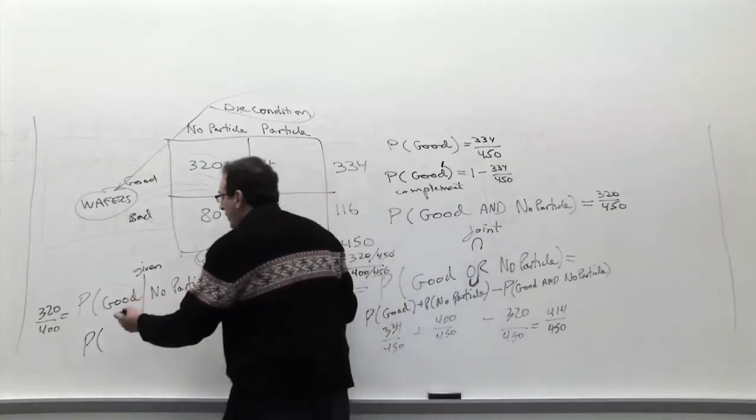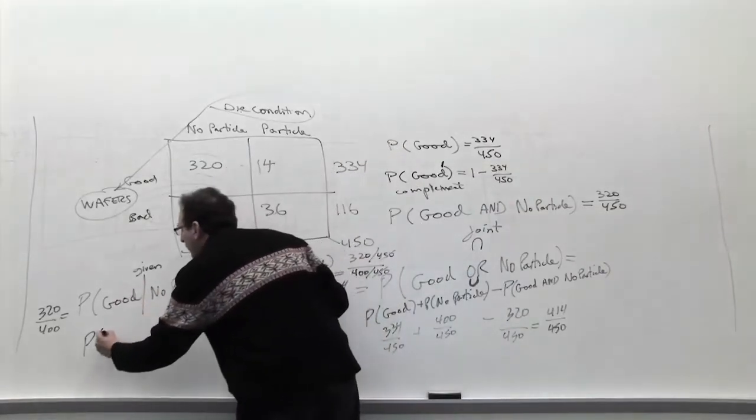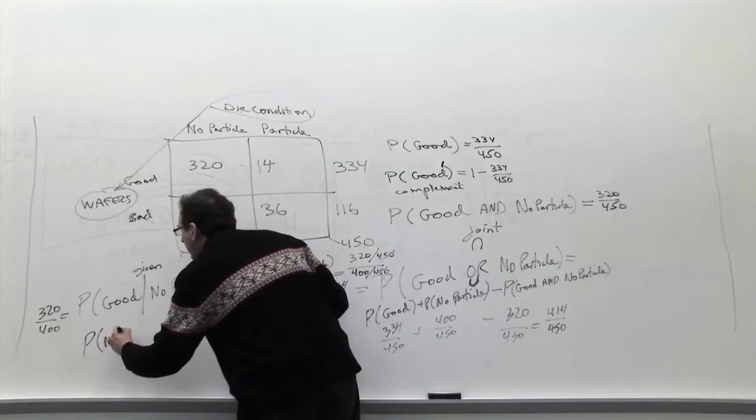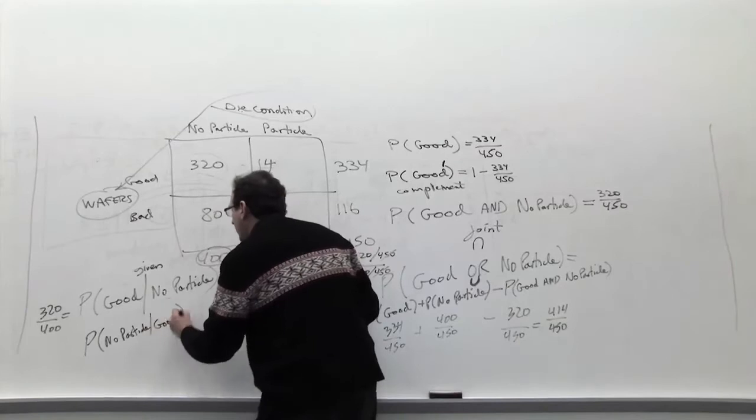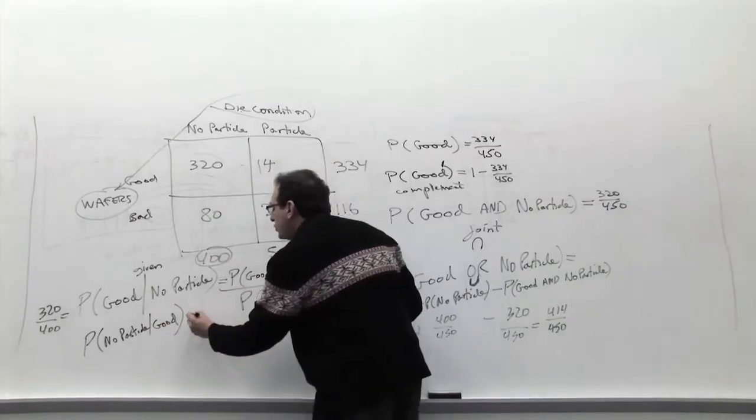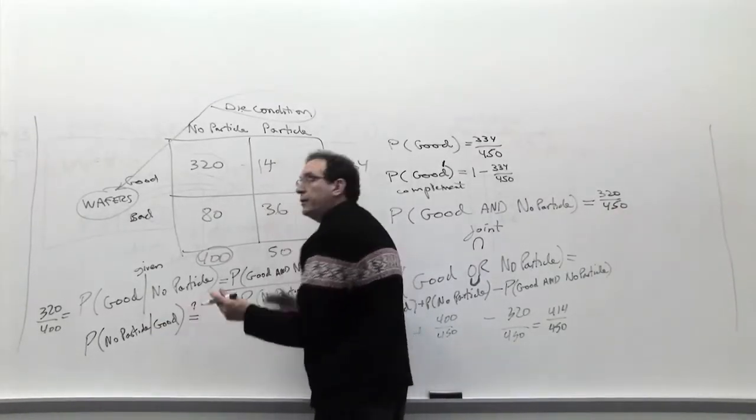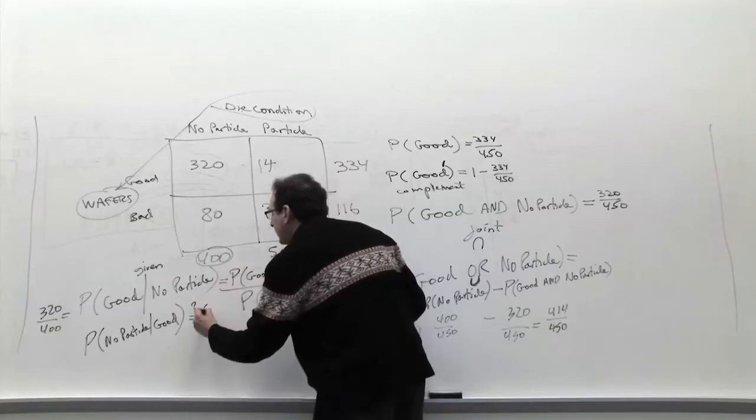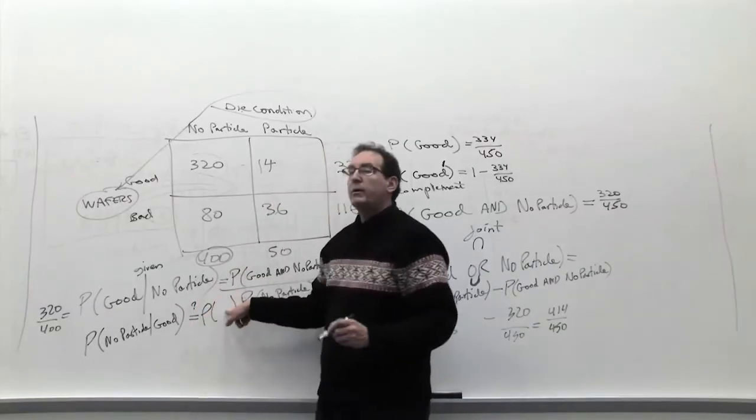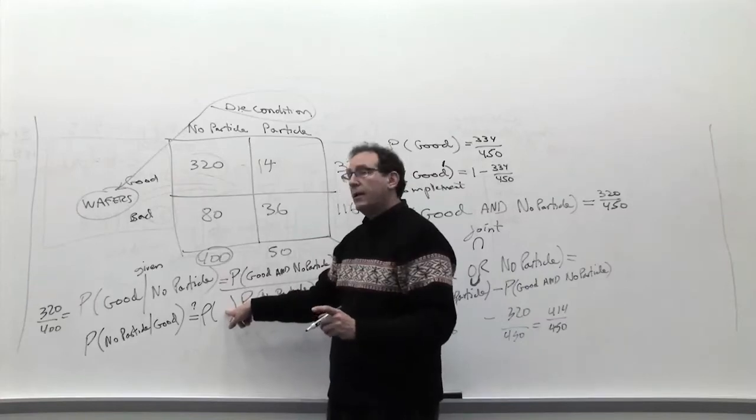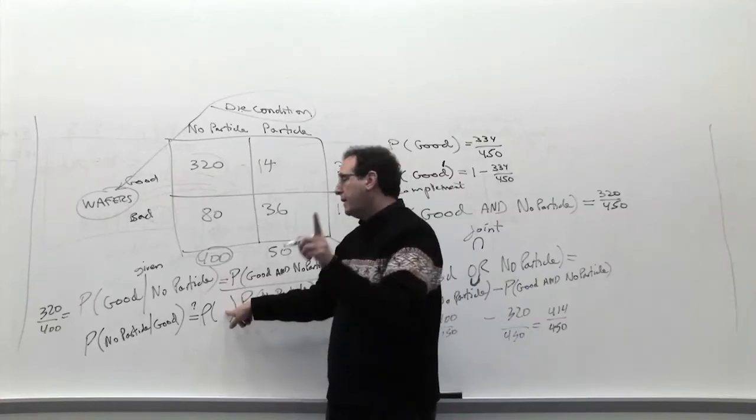So let's take the first one. Let's take, just to show you a different calculation, no particle given good. I'm just picking that as my first. And then your job is to show, and I put a question mark here so that you can prove it yet, but is that the same as what? The probability of no particle? Excellent. No particle.